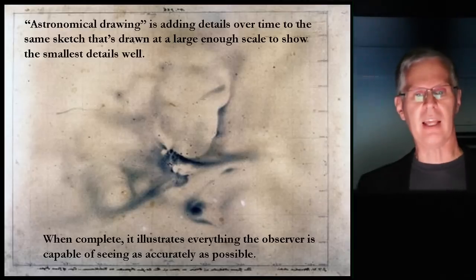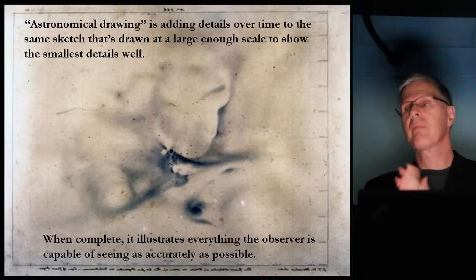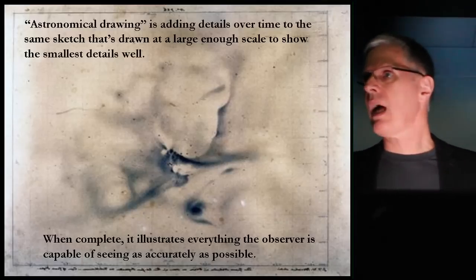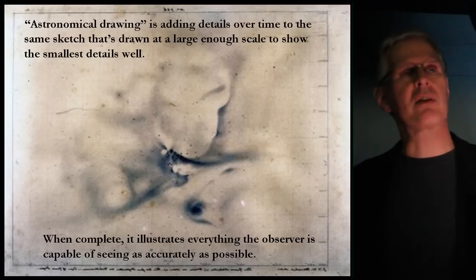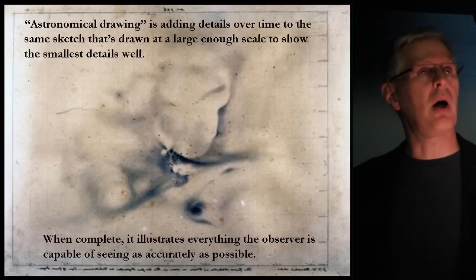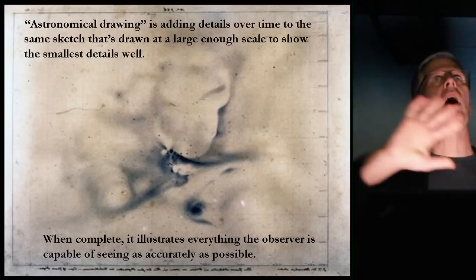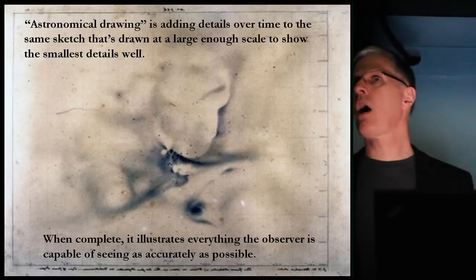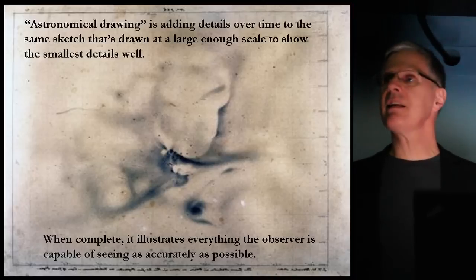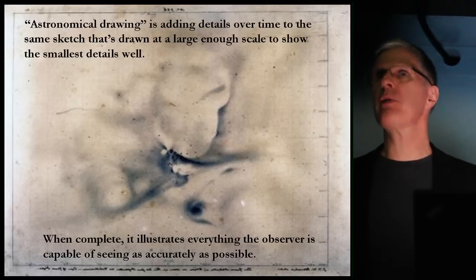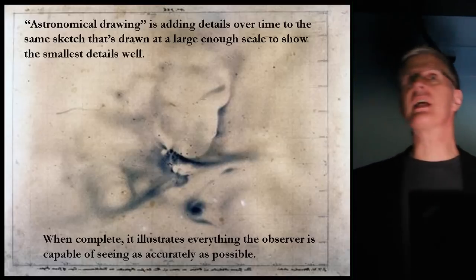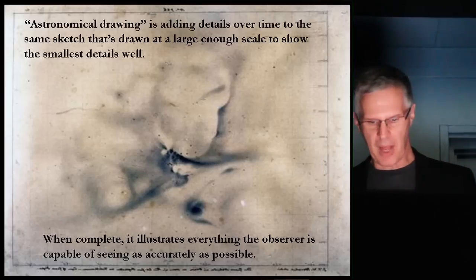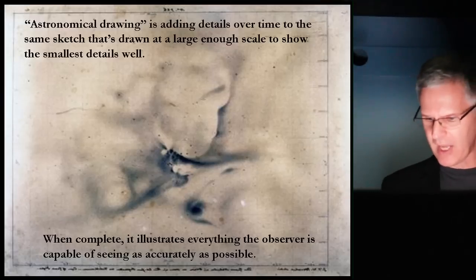My definition of astronomical drawing: when I look at the scale of which most people make their sketches in their notebooks, generally they're pretty small. But astronomical drawing is drawing at a large scale so the smallest details in an object are well seen, and it's adding details over time to the same large scale drawing. When you're finished, you have a drawing that illustrates everything you're capable of seeing as accurately as possible.